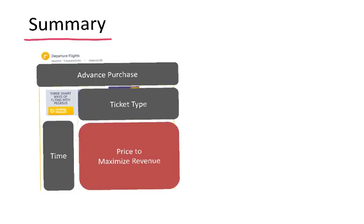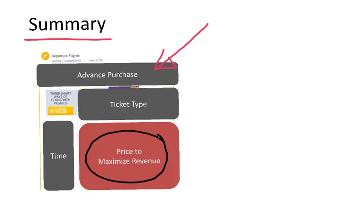As a summary, revenue managers set up prices to maximize revenue. There are many factors that can influence the price of a ticket, but some of the ones described in this video are: how early the ticket is bought before the flight, what time of day the flight is, and what the different ticket types are — including the flexibility of the ticket and the services associated with it.